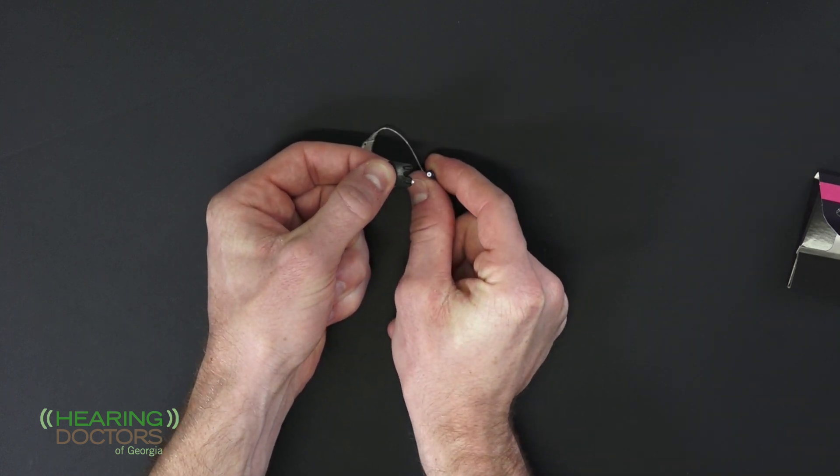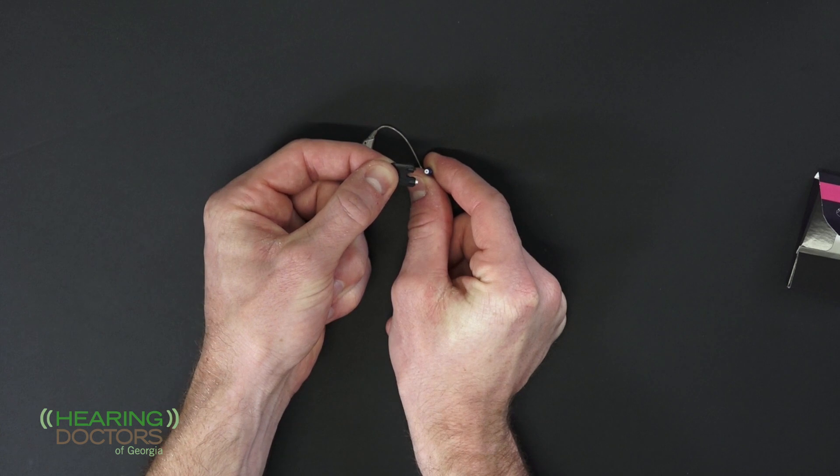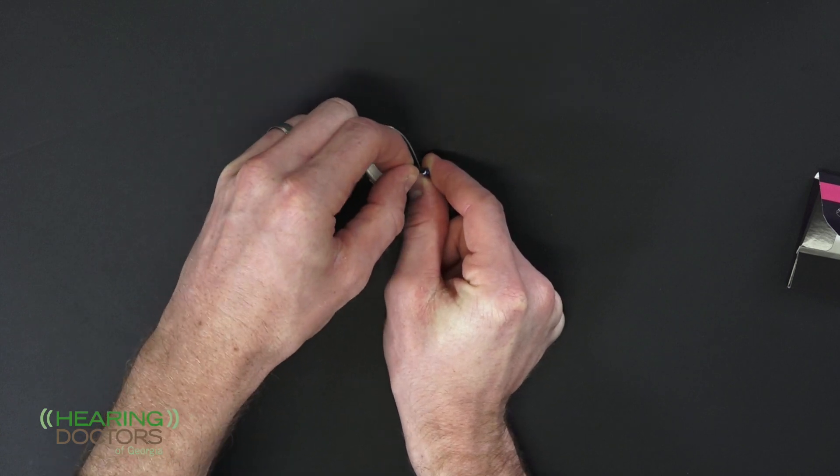You hold the receiver, press the end with nothing on it into the old filter until you feel it click.